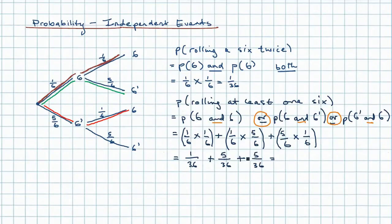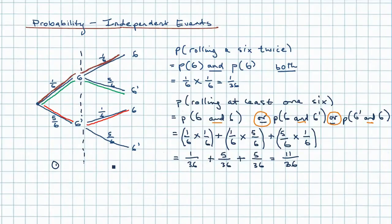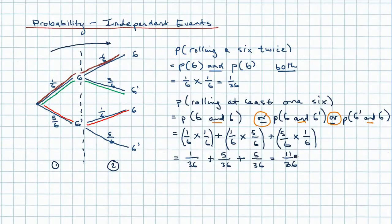We can add these together: one plus five plus five gives us eleven, and our common denominator is 36, so the answer is eleven thirty-sixths. With these simple diagrams, it's a good idea to put a dotted line to separate the two events. We can use a tree diagram to pick out the various possibilities - that gives us an example of when to add probabilities together. When tracing possibilities through the diagram, our chances are diminishing so we multiply those probabilities, then add them to get our final answer.